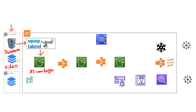Whatever files are sitting in the on-premise system can be directly ingested into S3 using Talend-based systems, ETL tools, Python code, or Viper code — we can read the files from the on-premise system and load them into the S3 raw layer.